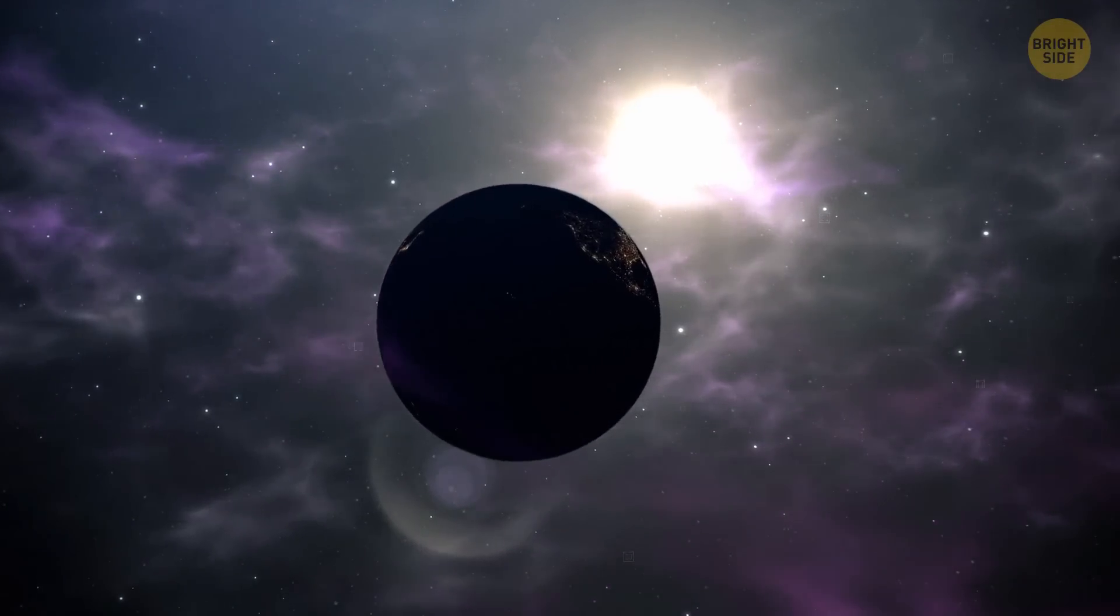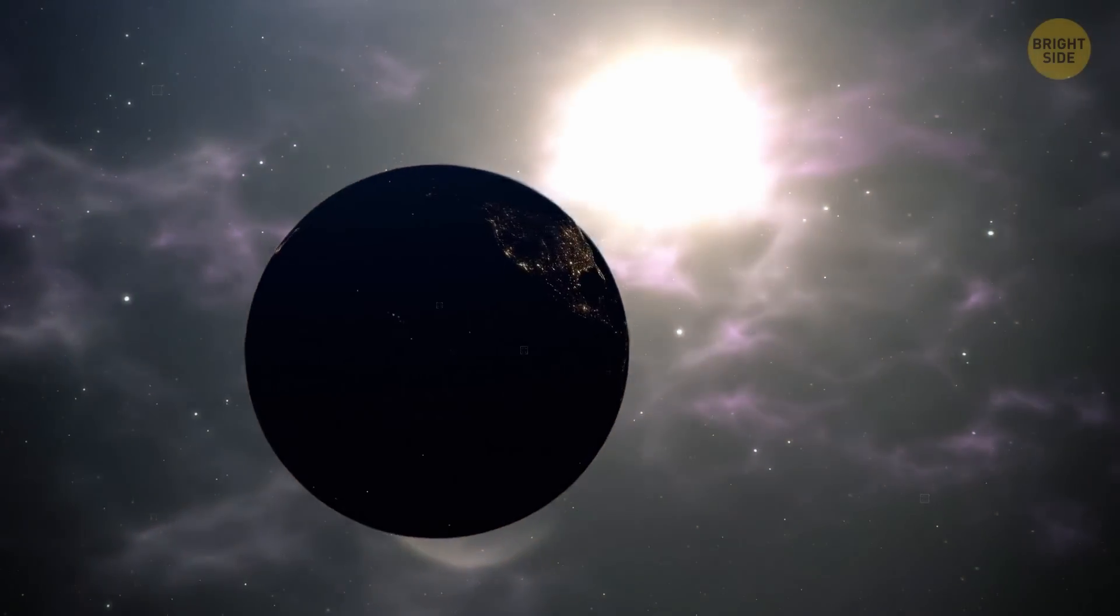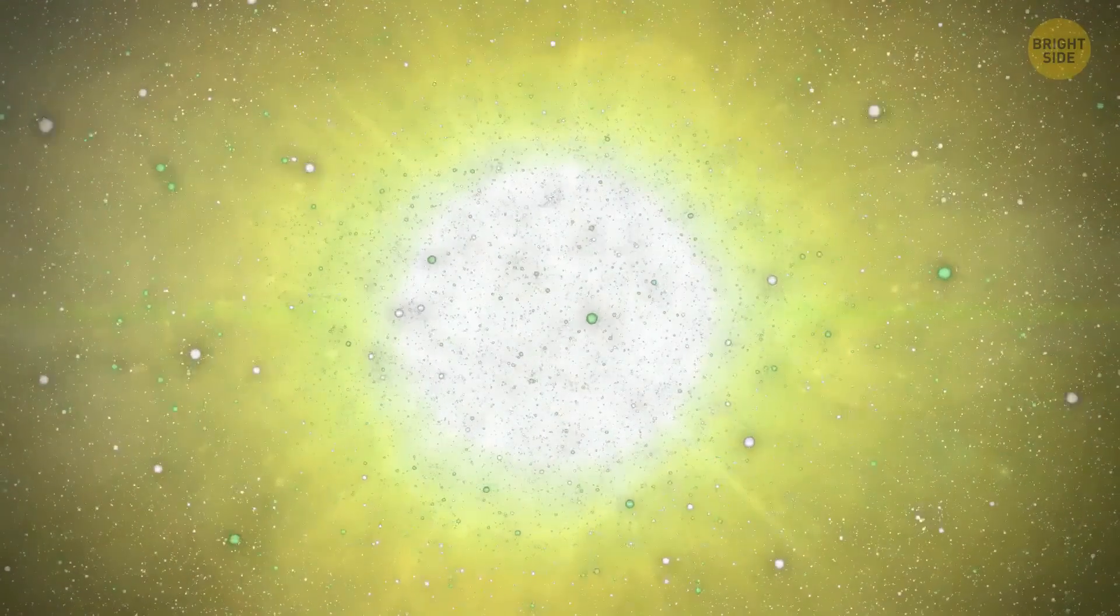Our sun could come to its end if it reaches the temperature of 50,000 degrees Kelvin. If you could float in space and come closer, you'd see it glow in eerie green tones because of doubly ionized oxygen.